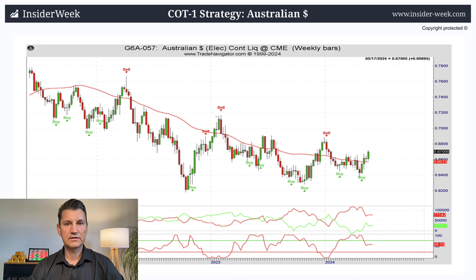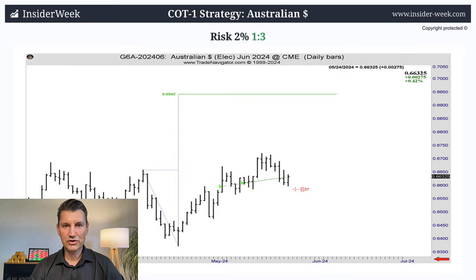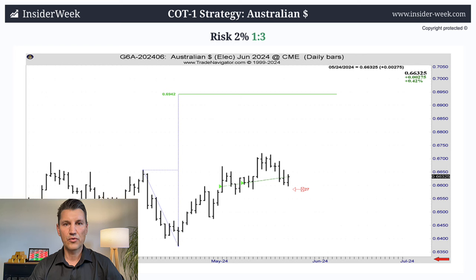Here you can see the weekly chart. I analyze the weekly chart and COT data, create COT buy and sell signals, then switch to the daily chart and wait for the right timing. I use technical analysis and price action to find the entry. Usually I trade between one and two percent risk per trade, and my risk-reward ratio in this trade is 1:2:3. I made two entries and built up my position to 27 long contracts.